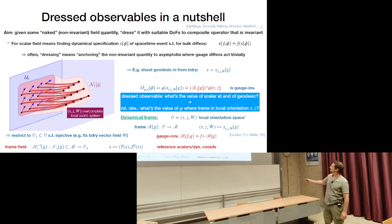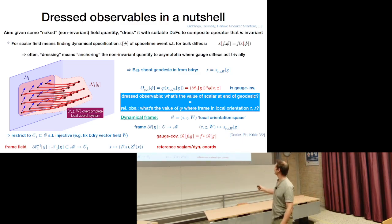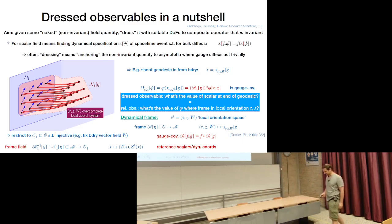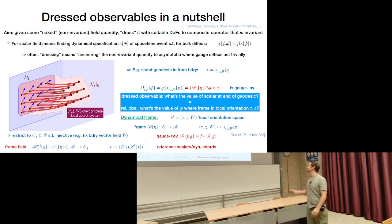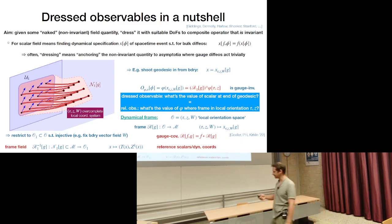Having this map is also very useful for objects other than scalars. For a scalar, having a parameterization of a single spacetime point suffices since it's ultra-local. But for vectors or tensor fields, you need the full frame map. This then also allows us to construct dressings of tensor fields and so on.